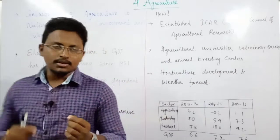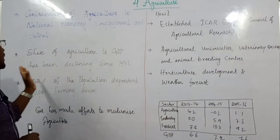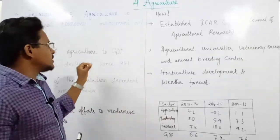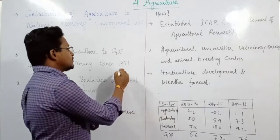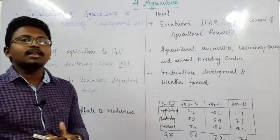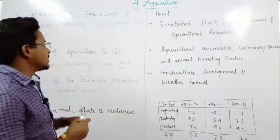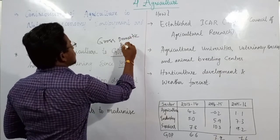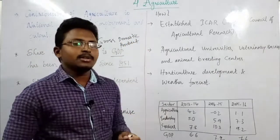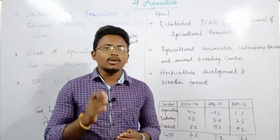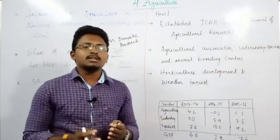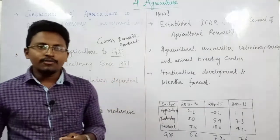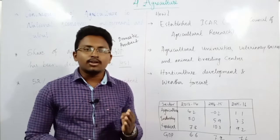The share of agriculture to GDP has been declining since 1951. If you look at the statistics, we can observe that since 1951 — that means after independence — there is less contribution made by agriculture to GDP. GDP means Gross Domestic Product. We will discuss GDP in detail in the Economics chapter on Sectors of the Indian Economy.